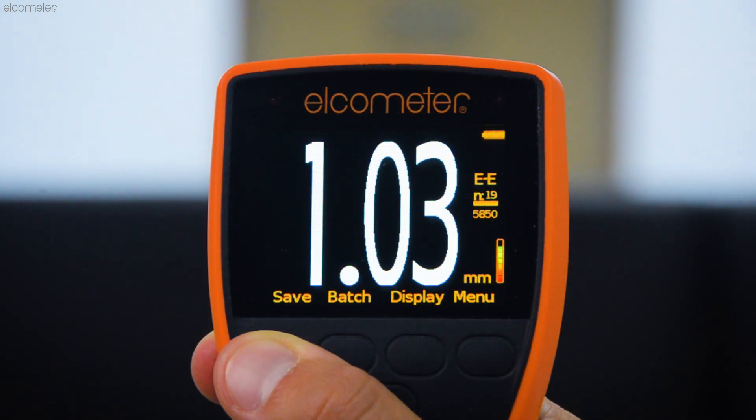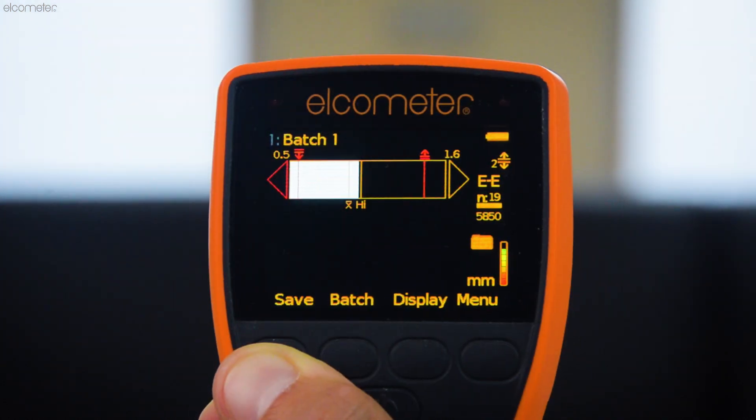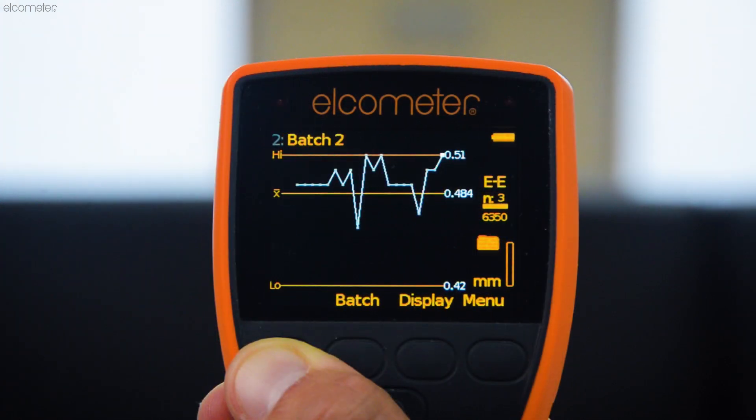In addition to displaying the material thickness, the Elcometer PTG-8 has a choice of displays which include user selectable statistics, thickness bar graphs, and run charts.